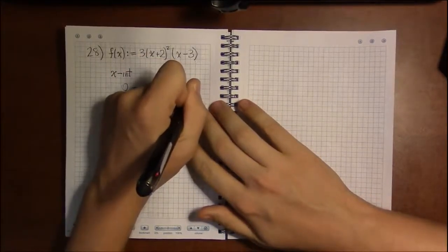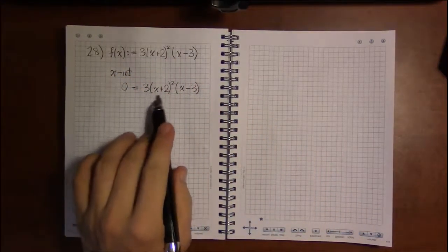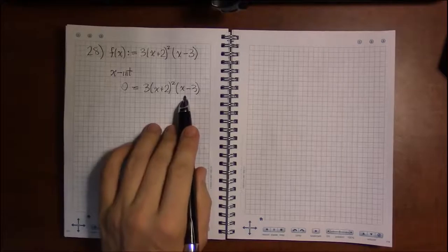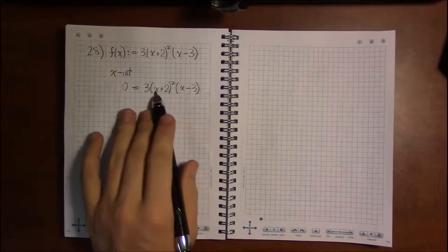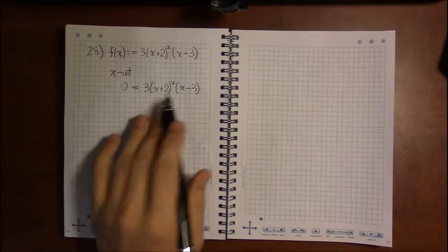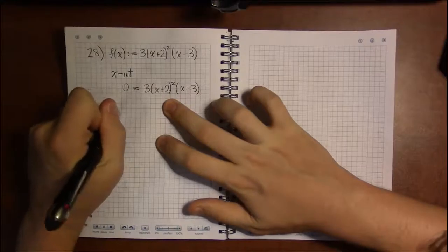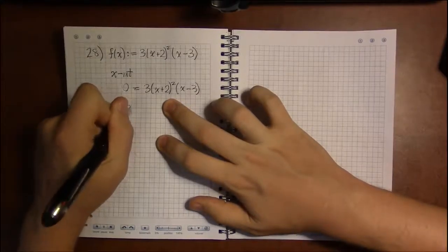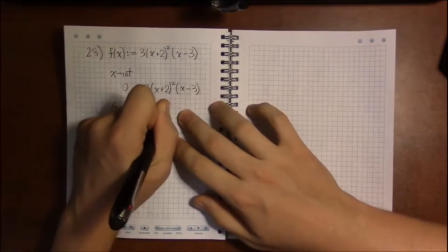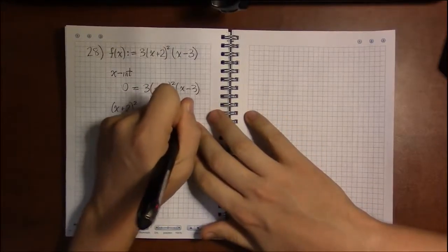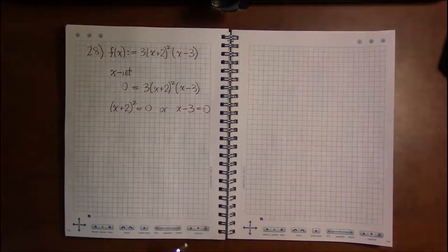Well, we've got a product of things being 0, so the only way that could happen is if one of these three things is 0. Well, 3 is certainly not 0, so the only thing that could be 0 is one of these two. So if this product is 0, it has to be the case that (x + 2) squared is 0, and if that's not the case, then it has to be that the other factor, (x - 3), is 0.